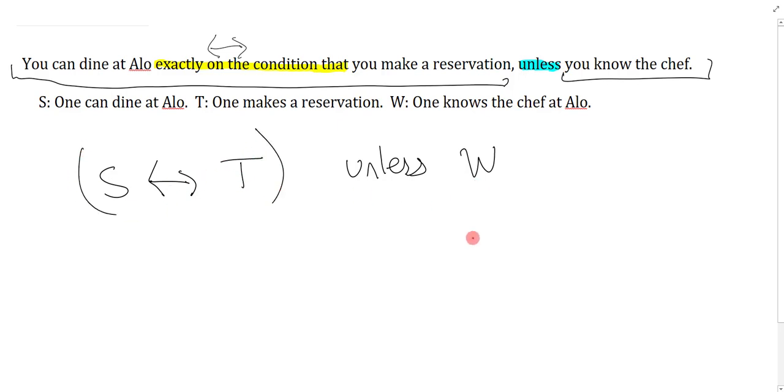Now the easiest way to symbolize unless is of course to use the disjunction. So I'm just going to erase this unless and I'll just write in a big or, and that's okay.